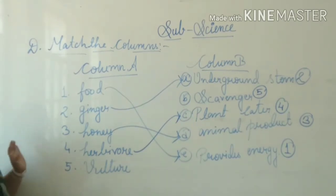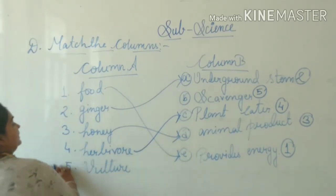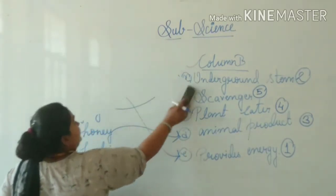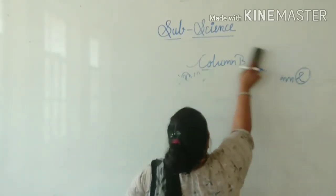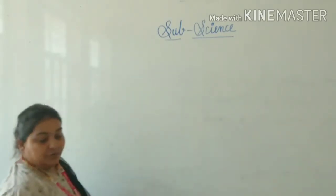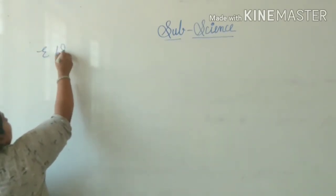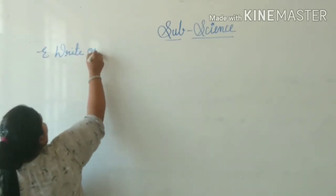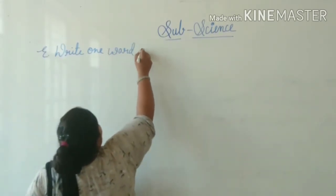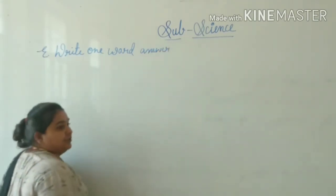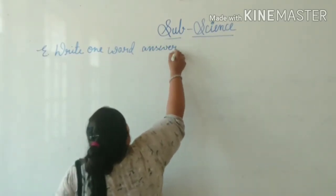So there we complete our first topic. Now we are going to start our second topic: write one word answer for the following. So let's start. You should be ready with your pencils. We are going to write down the answer for each question.